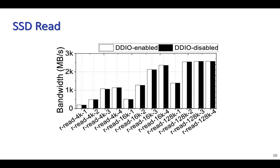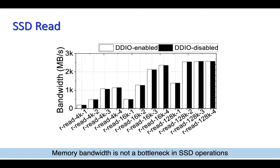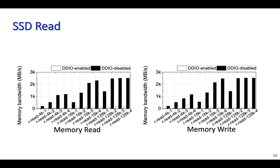This graph shows SSD read bandwidths with DDIO enabled and disabled. Our experiment shows that disabling DDIO does not affect SSD read bandwidths, which is not surprising since memory bandwidth is much higher than SSD bandwidths — so reading from or writing to memory is not a bandwidth bottleneck in accessing a block device. However, if you look at memory bandwidth utilization for the same experiment, enabling DDIO significantly reduces memory read and write bandwidth utilization when an application reads pages from a block device such as SSD. So although disabling DDIO doesn't affect the read bandwidth of a standalone SSD microbenchmark, it has a side effect of causing interference inside the memory subsystem.